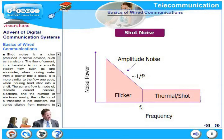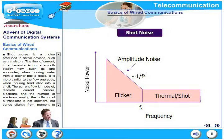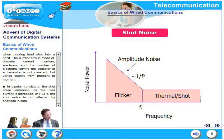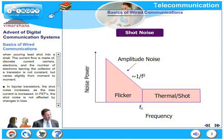Shot noise is produced in active devices such as transistors. The flow of current in a transistor is not smooth and steady — it is more similar to the flow seen when pouring lead shot into a shell. Current flow is made of discrete carriers, electrons, and the number of electrons leaving the collector varies slightly from moment to moment. In bipolar transistors, shot noise increases as bias current increases. In FETs, shot noise is affected by changes in the DC bias.